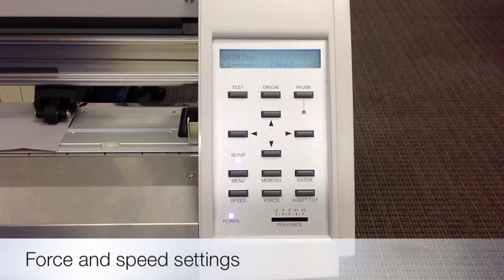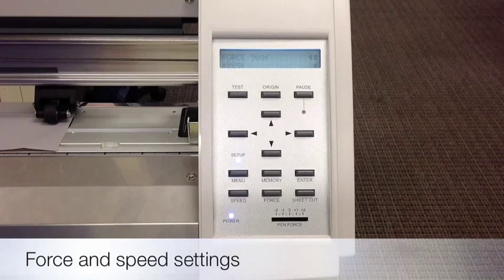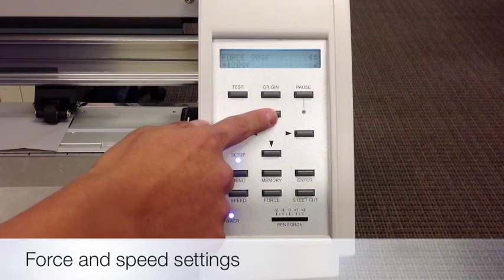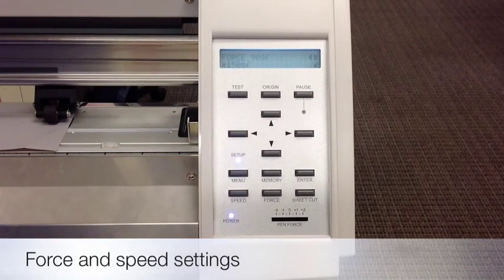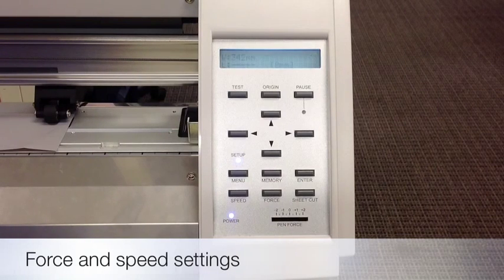Once you've pressed the enter button, then you can set your force and your speed. Push the force button once and you can check the force. If you're cutting t-shirt vinyl, your force should be at about 150 grams. You can change it by pushing the up or down arrow, and then push enter. If you're cutting regular adhesive vinyl or stickers, that force would be 90 grams.